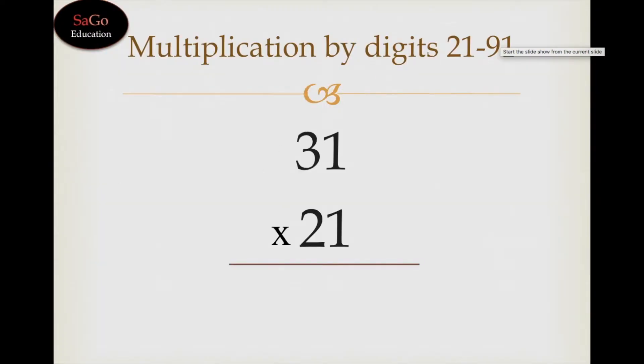In this video we learn how to multiply any number by 21, 31, 41, 51, and so on up to 91. We have a number 31 times 21. Let's put 0 on both the ends of 31 and now we need to follow a pattern.